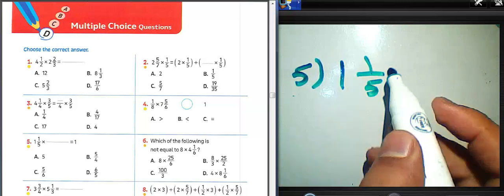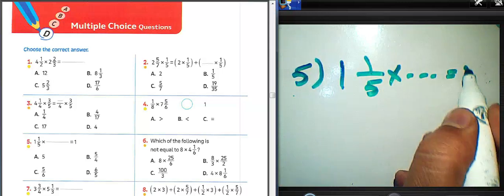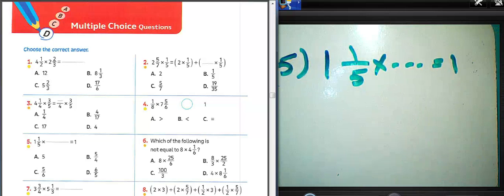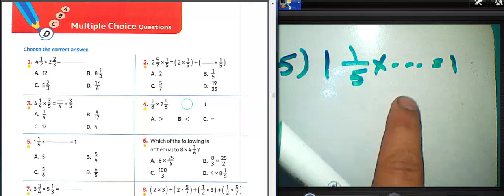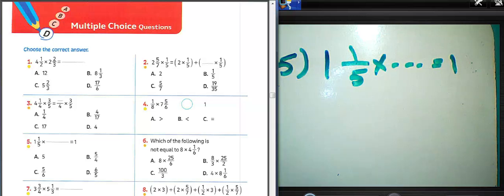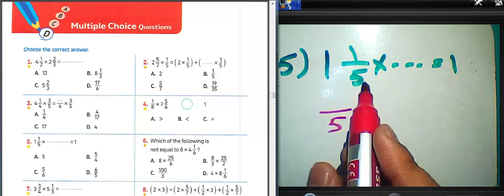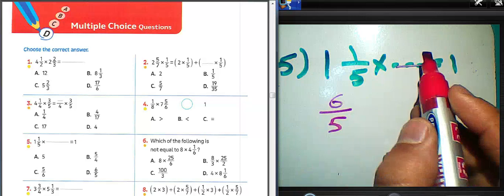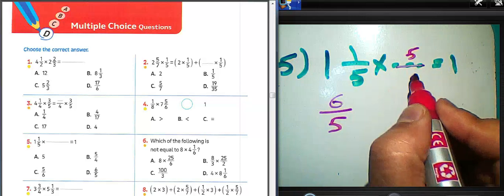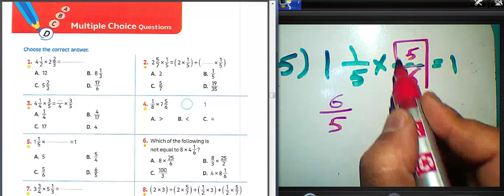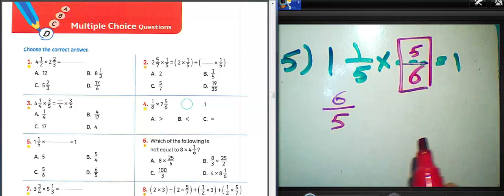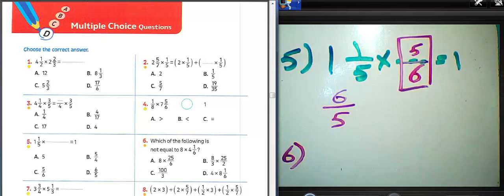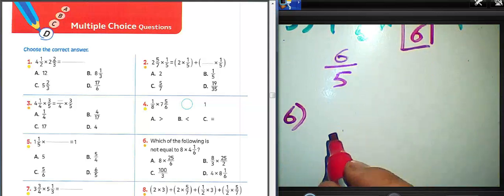Question number five: one and one over five, multiply by what, equals one? We must convert from mixed number to improper fraction. Write five in the numerator: one times five equals five, five plus one equals six. So we write the inverse of six over five, which is five over six. Write five over six here.